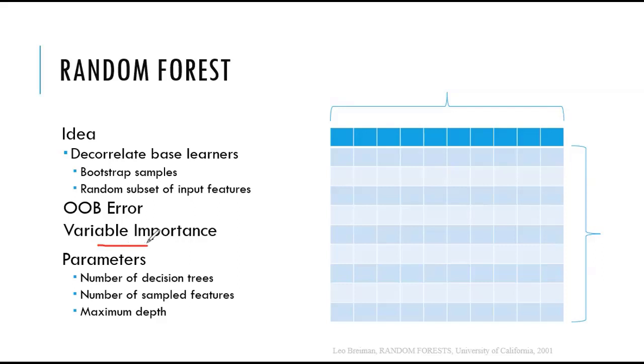There are a bunch of parameters that we need to determine when we train random forests. How many decision trees will be included in the ensemble? How many features we will sample for every tree? What will be the maximum depth of the decision tree? Other than number of sample features, number of decision trees and maximum depth are also used in bagging.